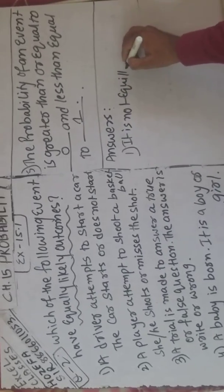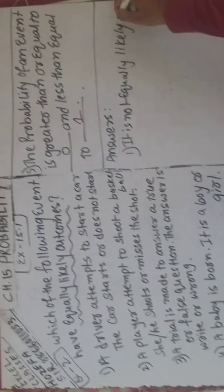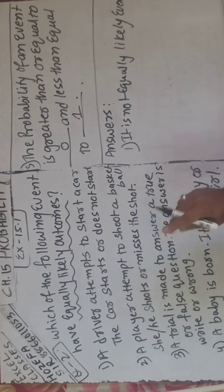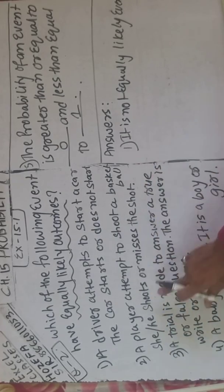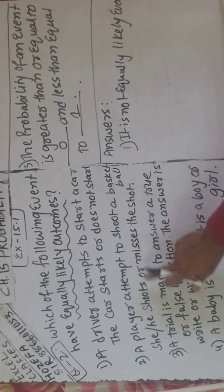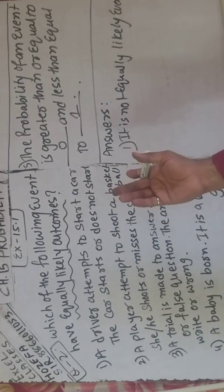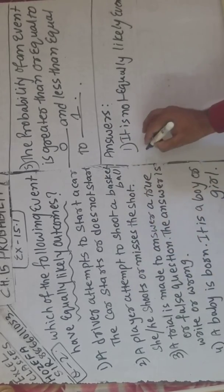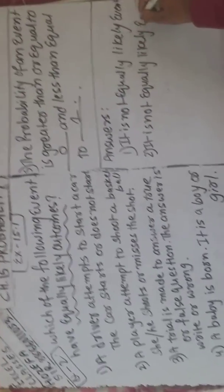Second: a player attempts to shoot a basketball — he or she shoots or misses the shot. Yeh bhi equally likely nahi — kyunki agar accha player hai toh shoot obviously kar payega, aur agar accha player nahi hai toh shot obviously miss hoga. It is also not an equally likely event.